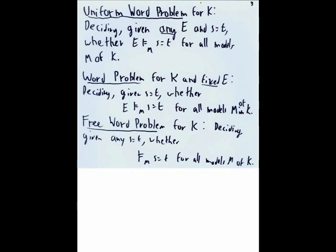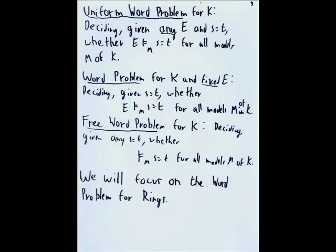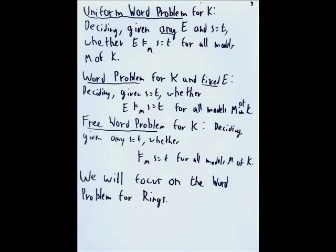So we can do these for any set of axioms K, but in particular today, we will focus on the word problem for rings. And there's a few reasons why we like to do this. One is that we can embed certain monoids and groups into a ring. And that's just by definition of the rings. If you think about it, a restriction of it would be an abelian group along with an abelian monoid, I believe.